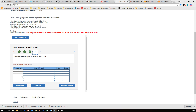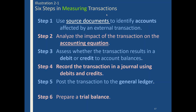I'm not going to do all of these for you, but I wanted to get you in the hang of how that's going to work. Here are the six steps: use a source document like a sales receipt or invoice, analyze the impacts on the accounting equation — what went up and down, debits or credits — record them in the journal, post them to the general ledger, and finally prepare a trial balance.